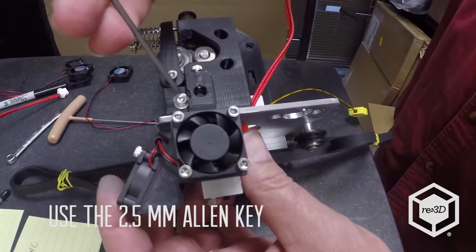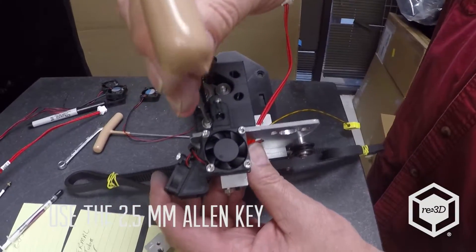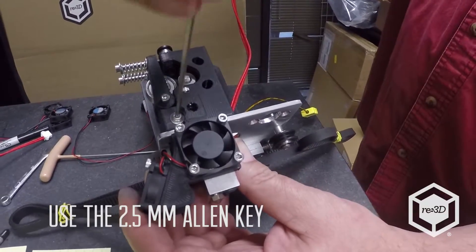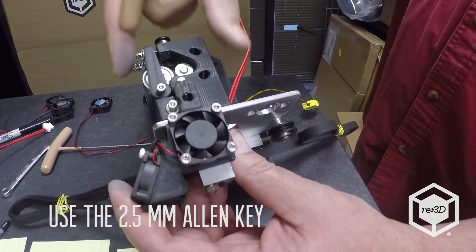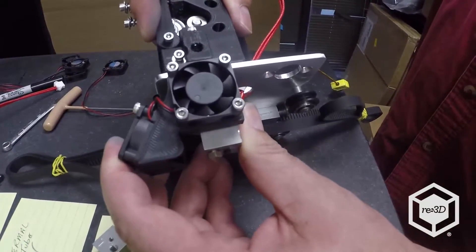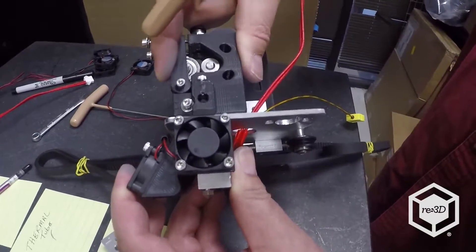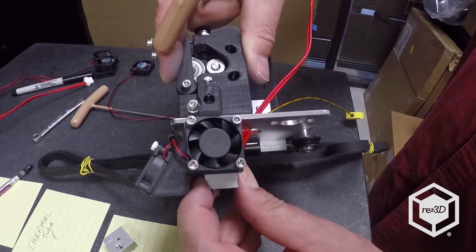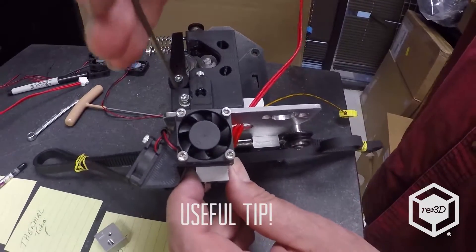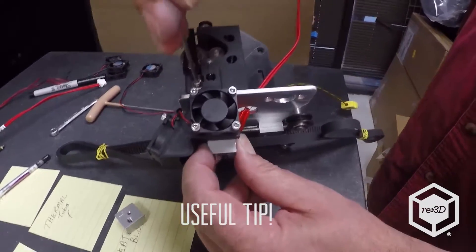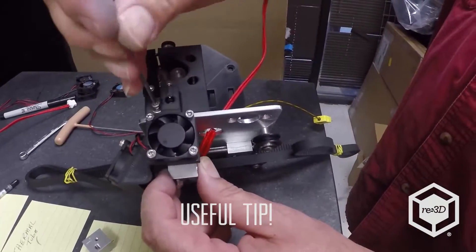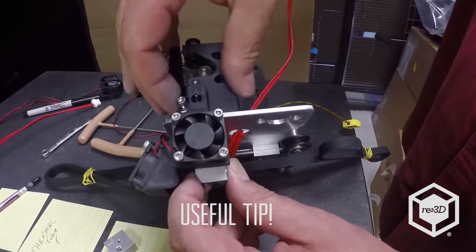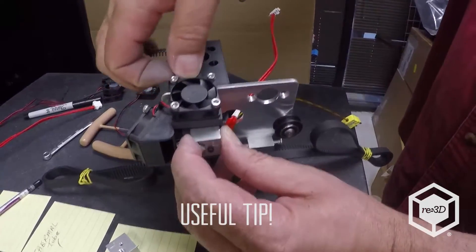This right here is the tensioner screw and it's what you use to tighten and loosen the hot end. So we're just going to loosen it up and as soon as I do it I can move the hot end up and down. You can get enough play between the two that you should easily be able to find a common set point. Now if you need to remove the entire hot end you do have to remove this adjustment screw.